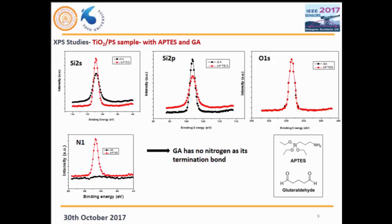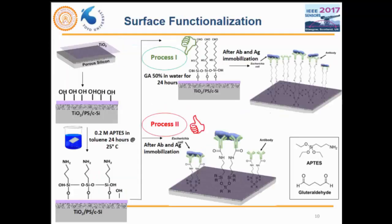In another XPS study where both APTES and glutaraldehyde were used, we see a big change in nitrogen — it almost goes down — because glutaraldehyde has no amine group present. This helps us understand the surface and surface reactions. To conclude the functionalization part, we decided not to go with process one because glutaraldehyde was dominant. Additionally, when we took PL measurements, photoluminescence was enhanced multiple times only because of the presence of glutaraldehyde, rather than the surface itself. So process two was taken forward.